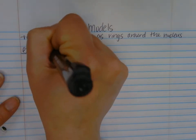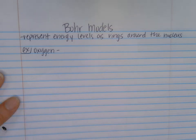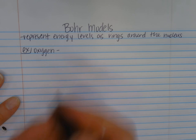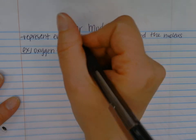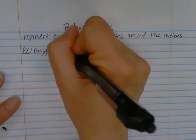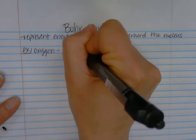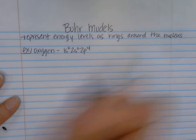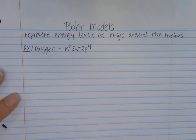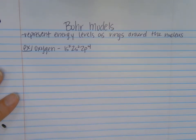Oxygen. The electron configuration of oxygen — we know it has eight electrons — is 1s2, 2s2, 2p4. And so we're going to use this to draw our Bohr model.